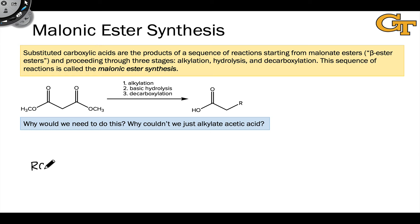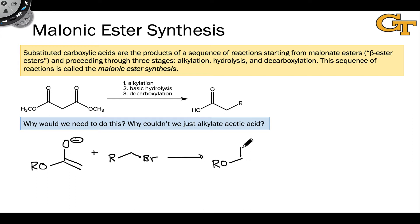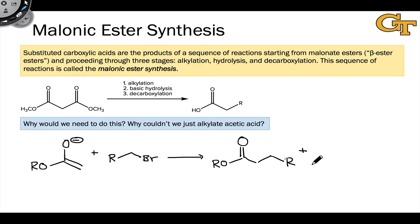In an earlier video, we talked about the use of LDA to generate ester enolates quantitatively for alkylation reactions. Combination of an ester enolate generated in this way with a primary or secondary alkyl halide — say an alkyl bromide — supposedly gives the corresponding substituted ester. But we have a similar problem to the one we saw in the last video on the acetoacetic ester synthesis with this simple alkylation of an enolate.